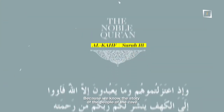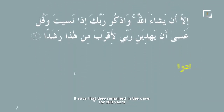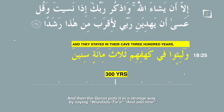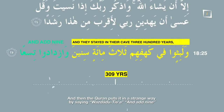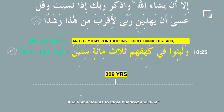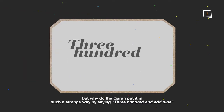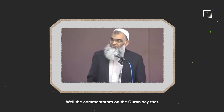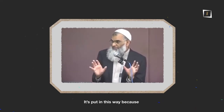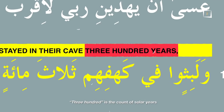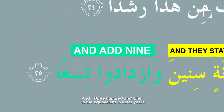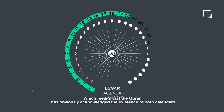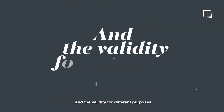In Surah Al-Kahf, the story of the people of the cave states that they remained in the cave for 300 years, and then the Quran adds in a seemingly strange way: 'wazdadu tis'a' — and then they add nine — making it 309. Why did the Quran say 300 and add nine instead of simply saying 309? The commentators explain that 300 is the count in solar years, and 309 is the equivalent in lunar years, showing that the Quran has acknowledged the existence and validity of both calendars for different purposes.